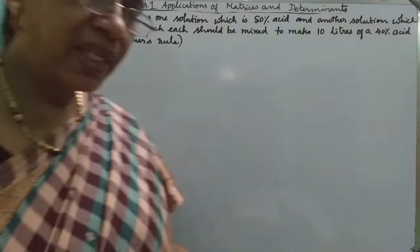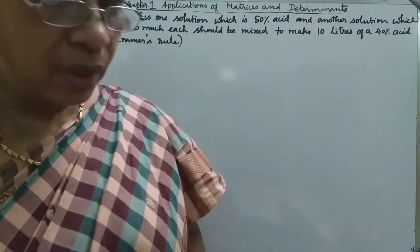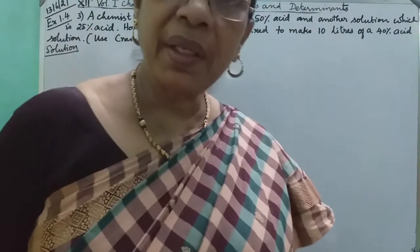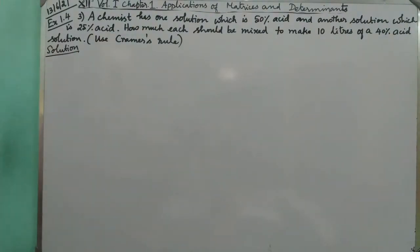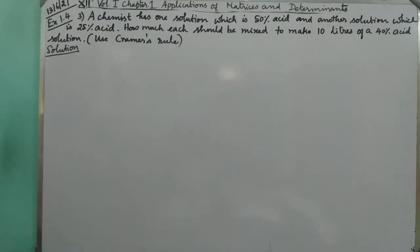Hello students, from exercise 1.4, sum number 3 part of the program. Aquamist has one solution which is 50% acid and another solution which is 25% acid. How much of each should be mixed to make 10 liters of a 40% acid solution? This is the problem.